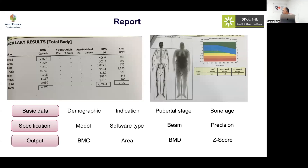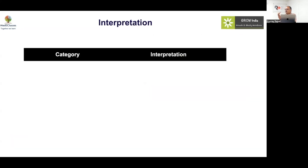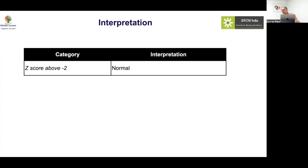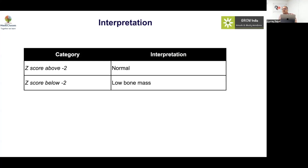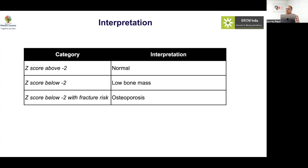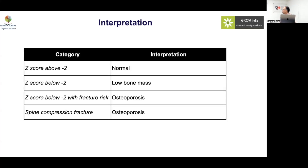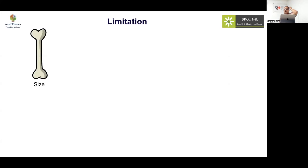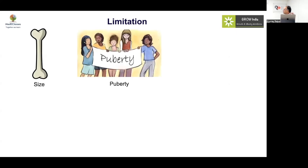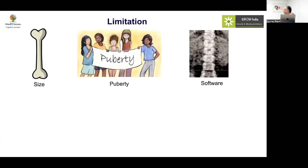The output you get includes bone mineral content, bone mineral area, bone mineral density, Z-score, and T-score. Interpreting results: a Z-score above minus 2 is normal. Below minus 2, do not call it osteoporosis — call it low bone mass. Below minus 2 with fracture is called osteoporosis. If there is a spinal compression fracture, whatever the BMD, that constitutes osteoporosis.